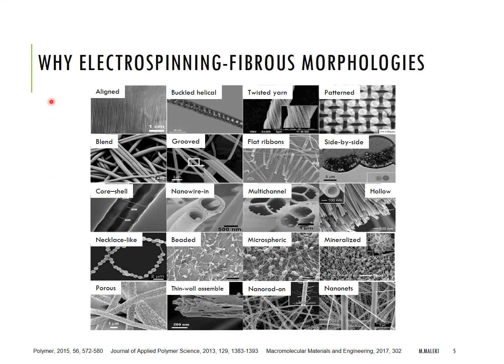To fulfill the high demand for novel products in various applications, scientists and researchers from all over the world have developed different fiber morphologies, including aligned fibers, blended fibers, core-shell fibers, porous fibers, beaded fibers, hollow fibers, side-by-side, and patterned fibers. In this slide you can see the different morphologies that are all produced using electrospinning.